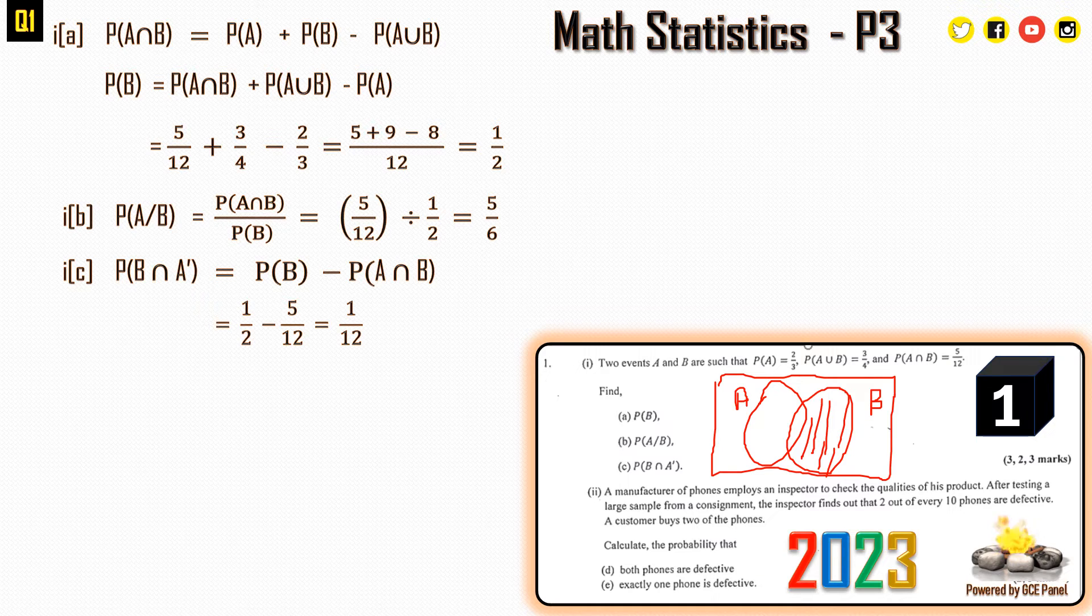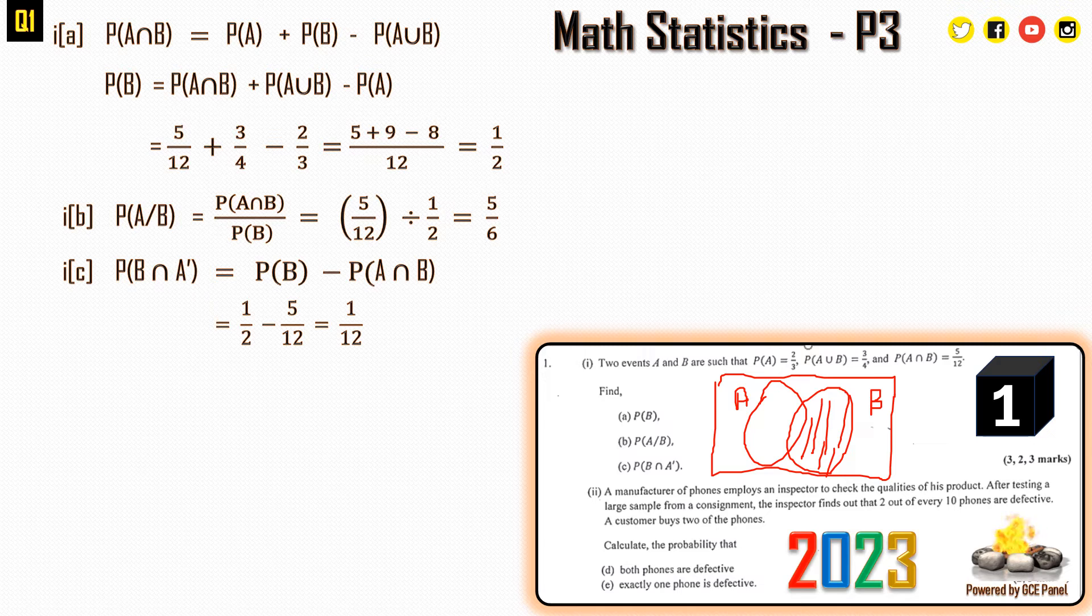Now sub 2 of this question reads: a manufacturer of phones employs an inspector to check the qualities of his products. After testing a last sample from a consignment, the inspector finds out that 2 out of every 10 phones are defective. A customer buys two of such phones. Calculate the probability that (d) both phones are defective and (e) exactly one phone is defective.